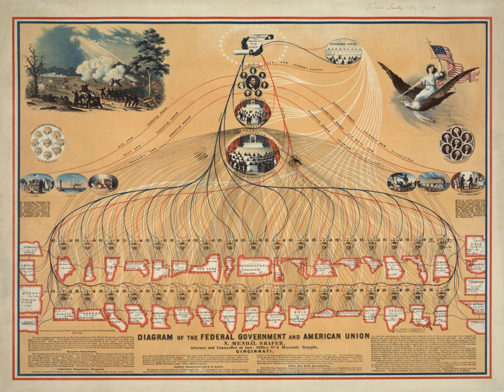The Federal Government of the United States is the National Government of the United States, a federal republic in North America, composed of 50 states, a federal district, five major self-governing territories, and several island possessions.